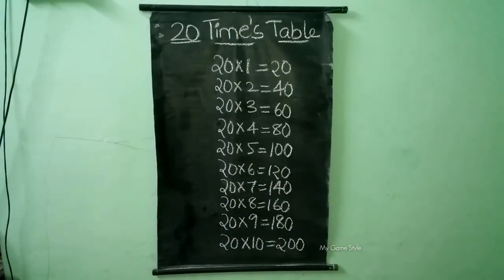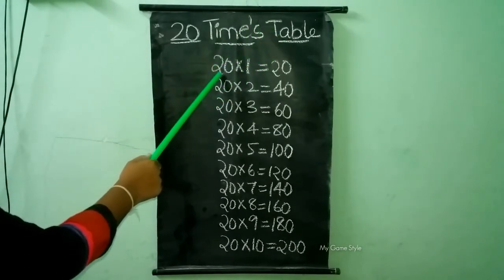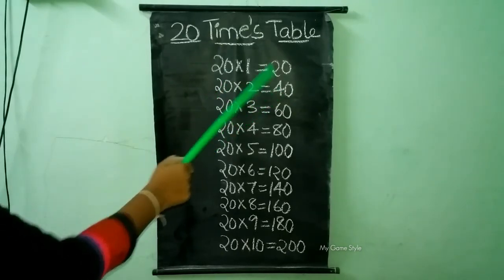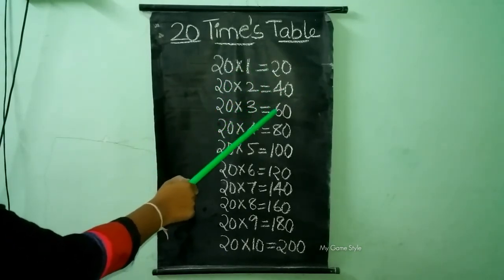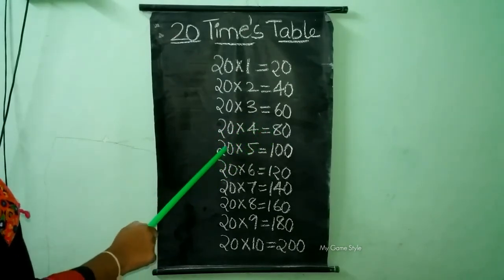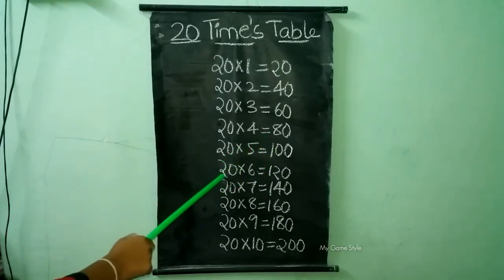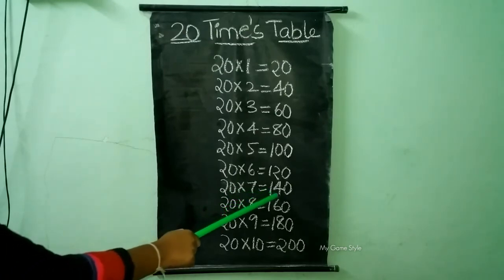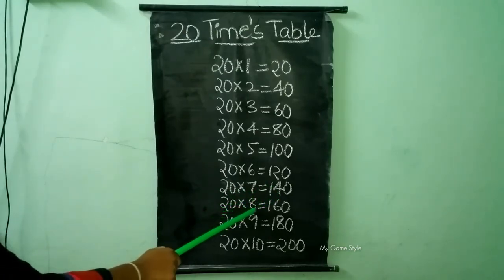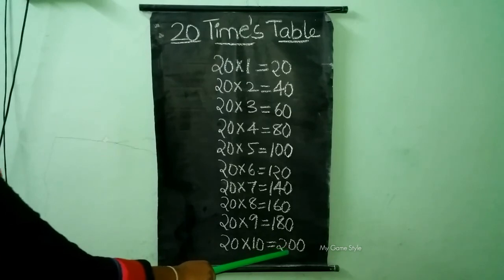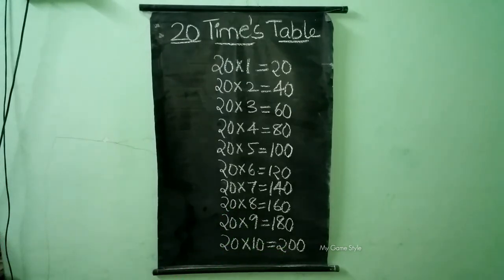20 times table. 20 times 1 is equal to 20. 20 times 2 is equal to 40. 20 times 3 is equal to 60. 20 times 4 is equal to 80. 20 times 5 is equal to 100. 20 times 6 is equal to 120. 20 times 7 is equal to 140. 20 times 8 is equal to 160. 20 times 9 is equal to 180. 20 times 10 is equal to 200. This is how we need to learn times tables.